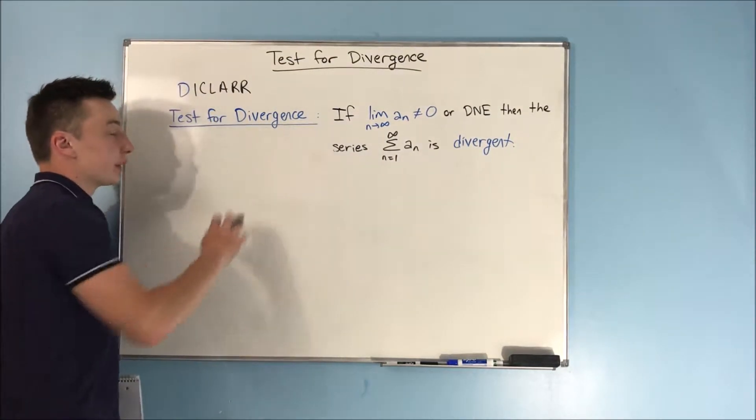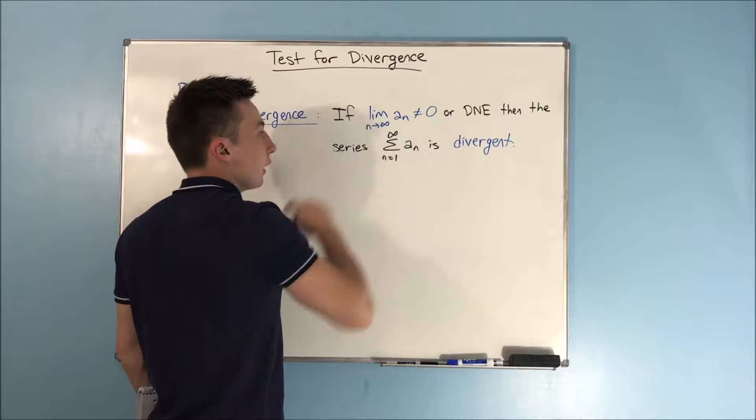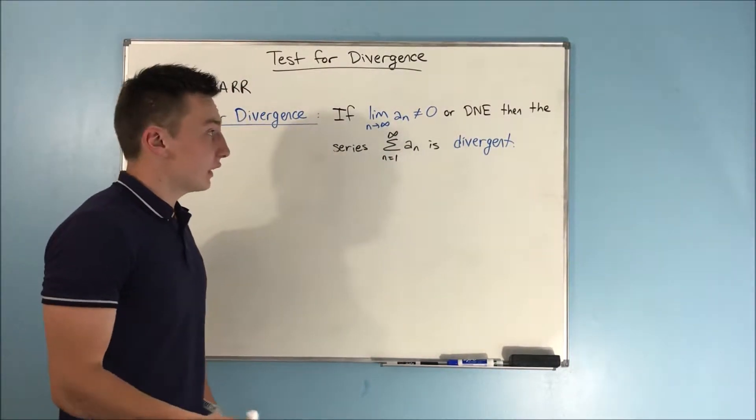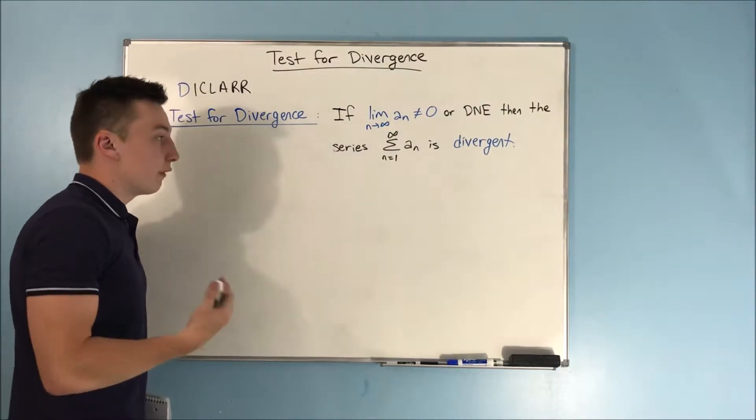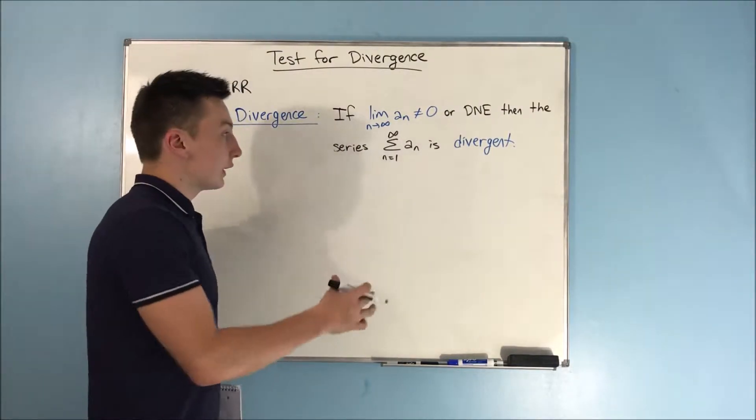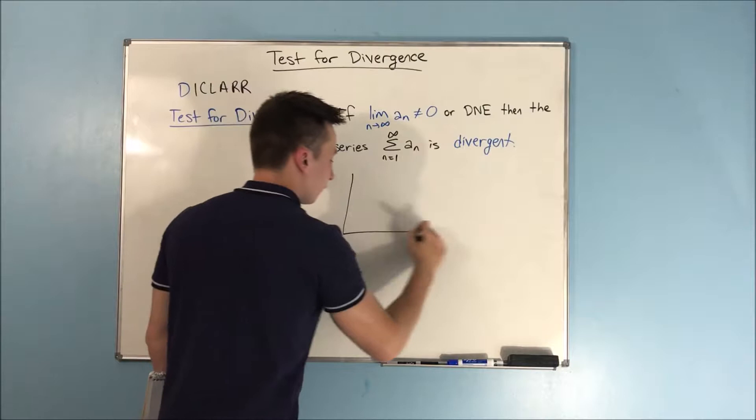Alright, so the test for divergence states that if the limit as n approaches infinity of a sub n does not equal zero, or if it doesn't exist, then the series, the sum from n equals one to infinity of a sub n is divergent. Now, to help you understand why this works, I'm going to illustrate it.